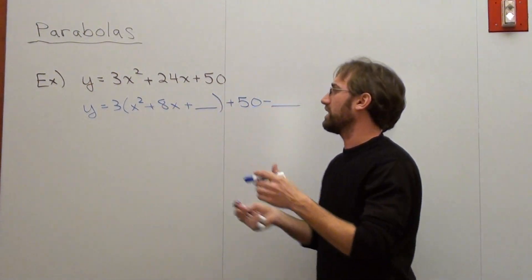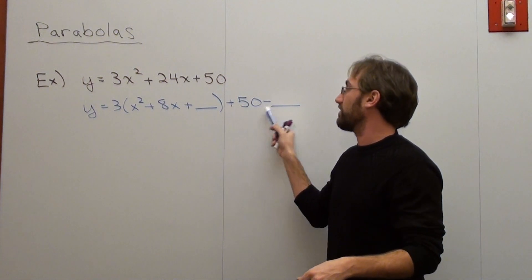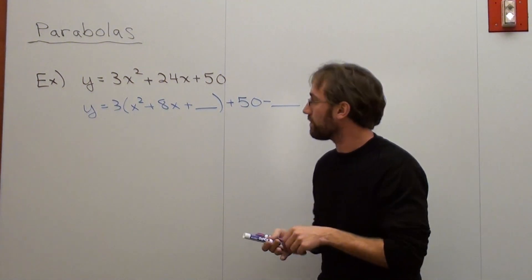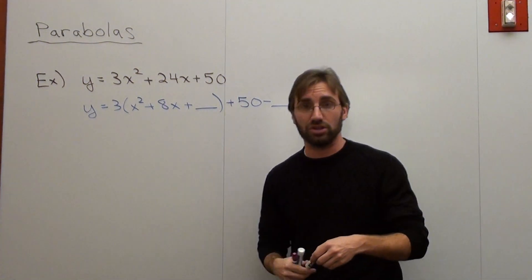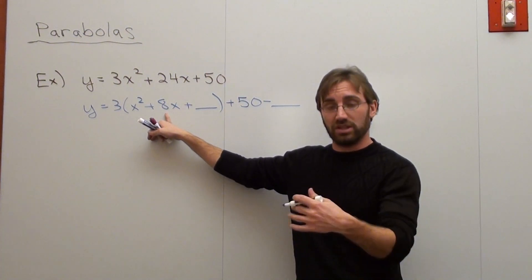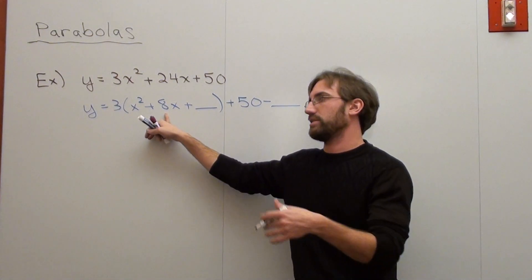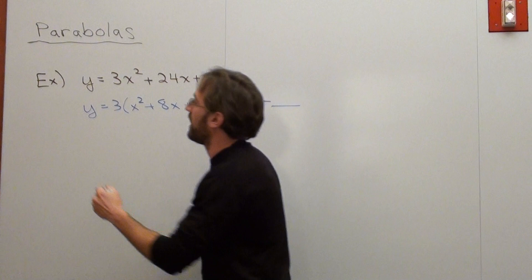So I've got y equals 3, quantity x squared plus 8x plus some number, close quantity plus 50 minus some number. Now in order to figure out this number, I'm going to use a completing the square technique. So what I do is I take this number 8, it's always the number with the variable. And I'm going to divide it by 2.